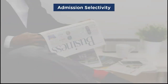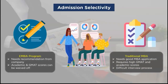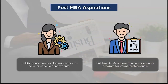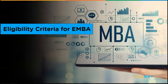The next parameter is admission selectivity. An EMBA is not as rigorous as a full-time MBA — intake capacity is lower and acceptance standards are less stringent, including lower GMAT score averages. Regular MBA programs, on the other hand, are incredibly competitive with acceptance rates of less than 10% and require very high GMAT scores. The last factor is post-MBA aspirations: a full-time MBA is more of a career-changer program, whereas the EMBA is aimed at developing leaders or vice presidents, with EMBA graduates paid considerably more due to their extensive past experience.